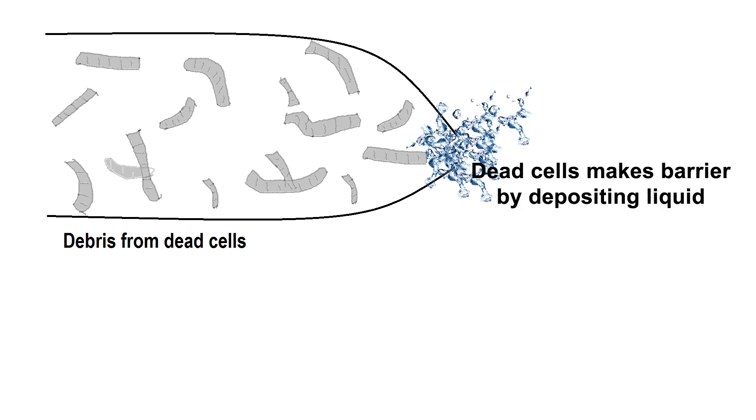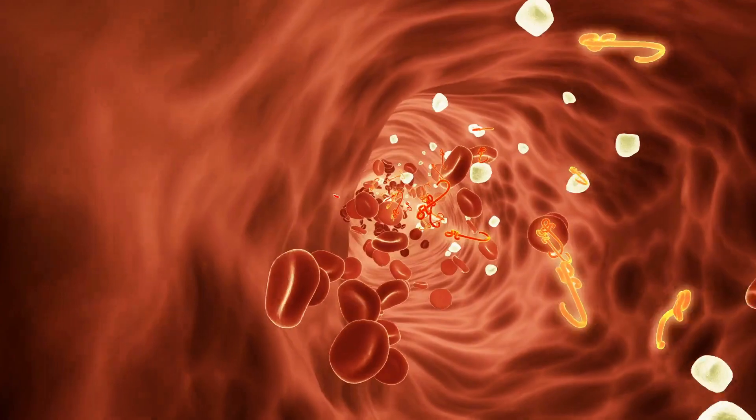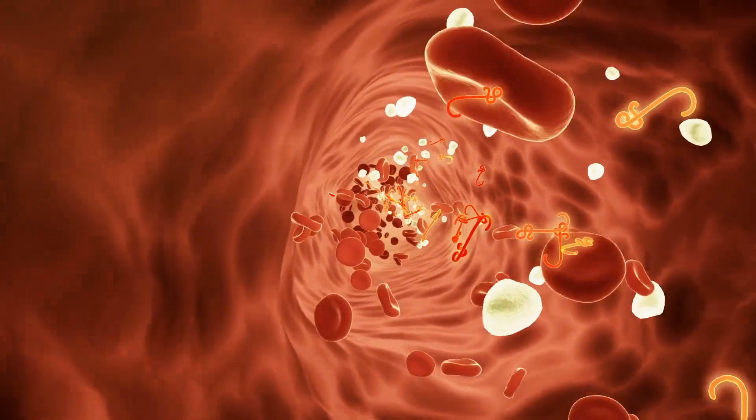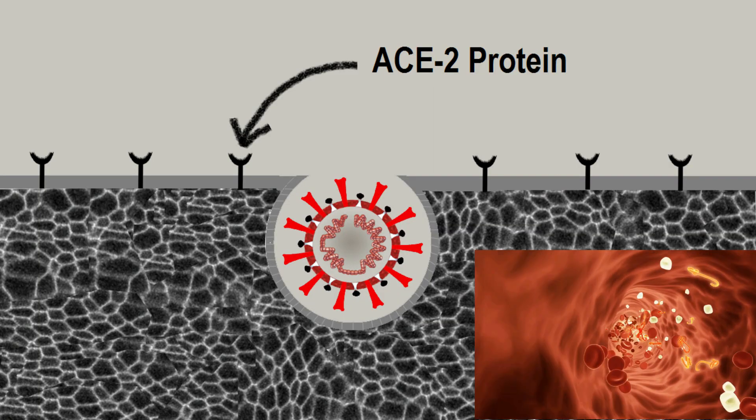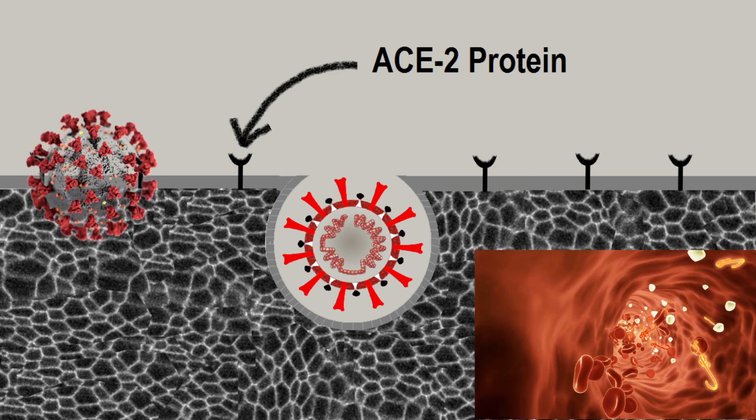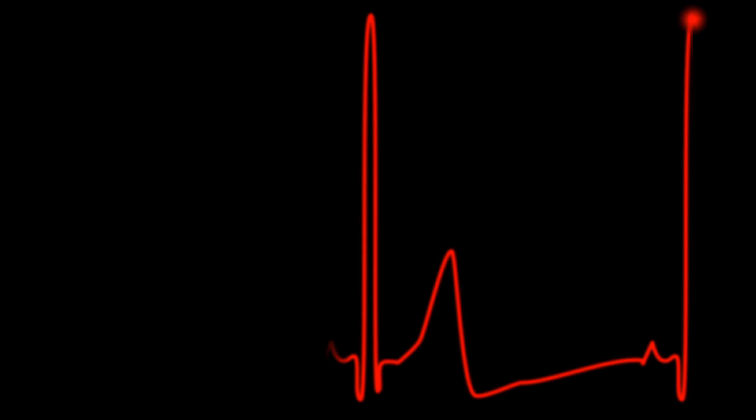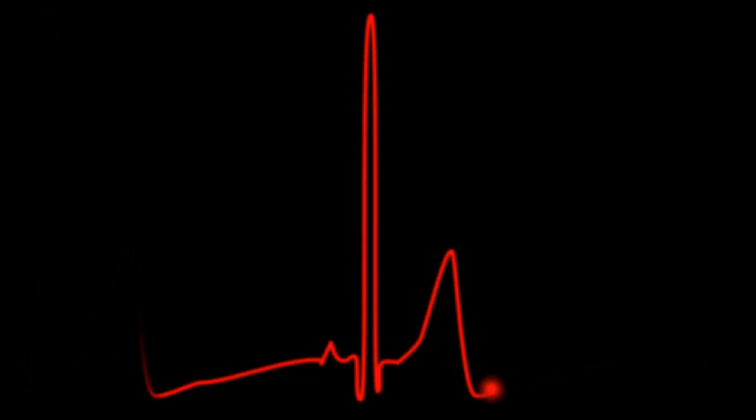Why is coronavirus more dangerous for diabetics or blood pressure patients? As I said before, this ACE2 receptor protein is important for regulating our blood pressure. When this protein is being used by coronavirus, the blood circulation process in our body is dramatically changed. Now you can imagine why blood pressure or diabetic patients are under critical situation during coronavirus infection.